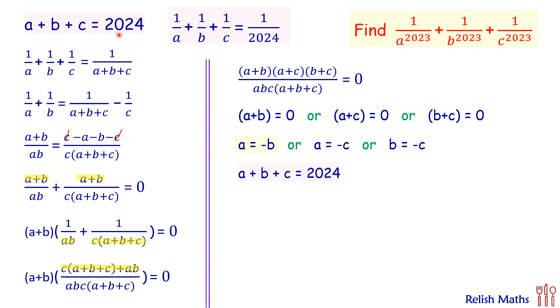Now in this our original expression, that is a plus b plus c equals 2024, if we'll replace a with minus b, so this a and b will get cancelled down and we'll get c equals 2024.